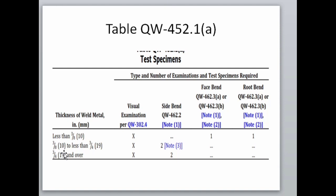If the thickness of weld metal is 10 mm to less than 19 mm, then we can adopt either side bend or face bend, and the number of test coupons remains 1 each. That is, if we are using a face and root bend combination, then 1 face and 1 root bend. If we are using side bend, then we have to perform 2 side bends to qualify the welder.